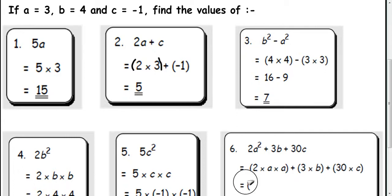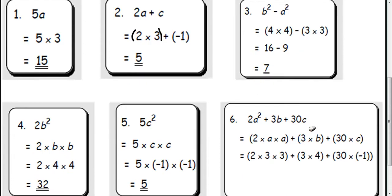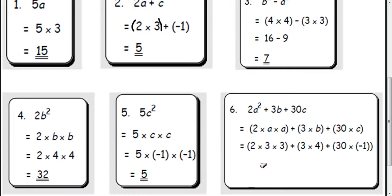So 2 times 3 times 3. Just take it slowly. 2 times 3 times 3. Add on 3 times 4. Add on 30 times negative 1. Now I'm going to work out these bits individually. Do the brackets first before adding. So 2 times 3 is 6. Times 3 is 18. So that's going to come to 18. Plus 3 times 4 is 12. And add on negative 30. This is just take away 30 really. Adding a negative is the same as subtracting. So 30 take away 30 is 0.